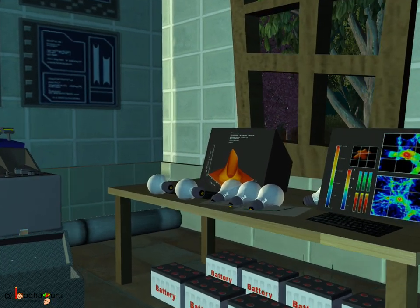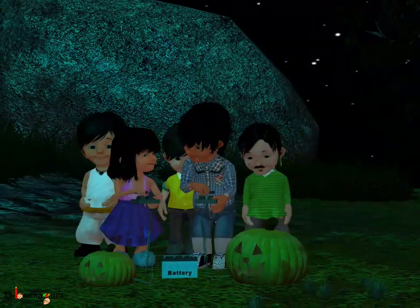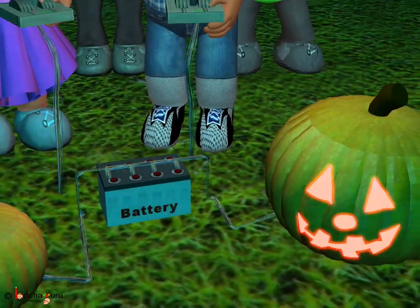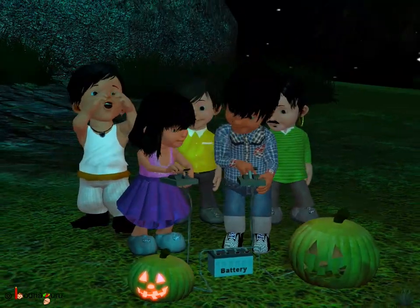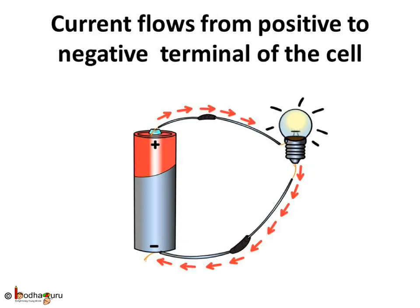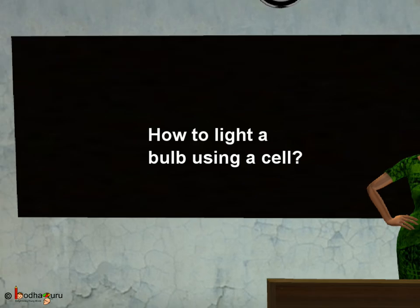Coming back to the story, it was just many bulbs, a portable battery to provide electricity to the bulbs, and a switch to stop and start the lighting of the bulbs that did the trick, and the kidnappers ran away in fright! So now you know how to light a bulb using a cell as the source of electricity. Both the terminals of the cell are connected to provide the complete path for the flow of electricity, and electricity flows from the positive terminal to the negative terminal of the cell. But a word of caution — as electricity is dangerous, don't attempt to do it alone. Do it under the supervision of adults and follow all the safety measures. Bye, and have fun!